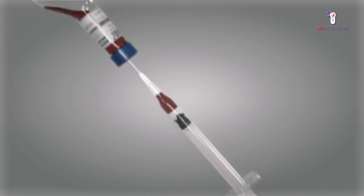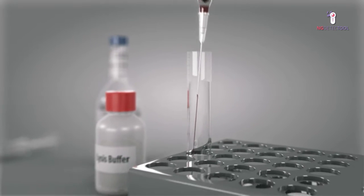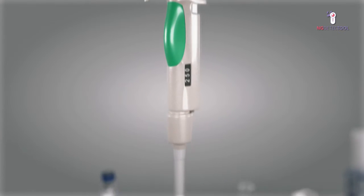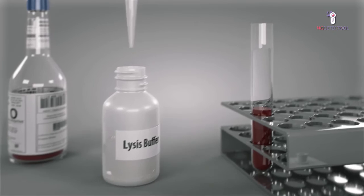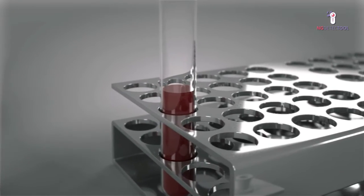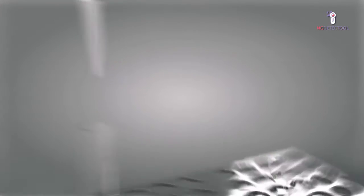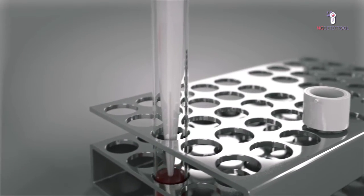When working with a positive blood culture, the first step consists of mixing 500 microliters of the sample with 250 microliters of lysis buffer and letting it react for a minimum of 2 minutes and a maximum of 30 minutes. Then insert the cup into the lower part of the device and load 500 microliters of this lysate into the cup.